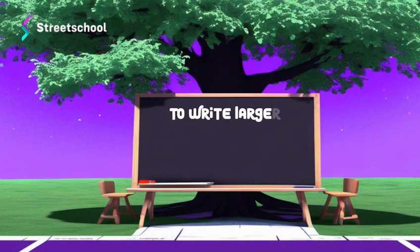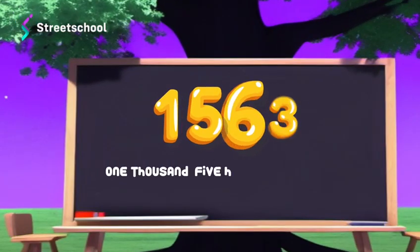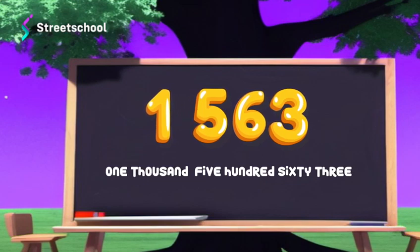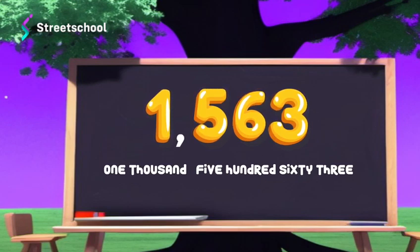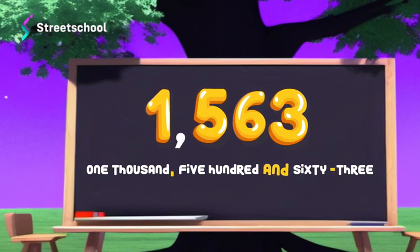To write larger numbers in words, here are the steps to follow. Write the place value of every digit in the number. Chunk up common positions into a large group of three to make it easier to read. Now tidy up by placing a comma after every group, the word AND after the hundreds position, and a dash after any T-Y word positions.